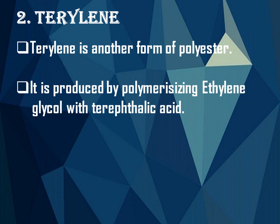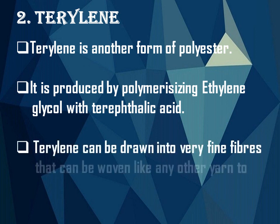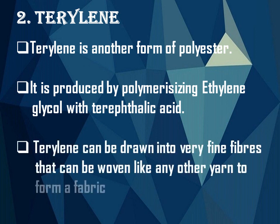The second example of polyester is Terylene. Terylene is another form of polyester. It is produced by polymerizing ethylene glycol with terephthalic acid. Terylene can be drawn into very fine fibers that can be woven like any other yarn to form a fabric.